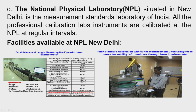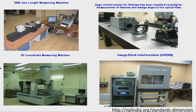Some of the facilities available at NPL include a length measuring machine with laser interferometer, flick standard calibration with 60 nanometer measurement uncertainty for in-house traceability of roundness through laser interferometer, a 1000 mm length measuring machine, a Zygo interferometer for flatness measurement, a 3D coordinate measuring machine and a gauge block interferometer.